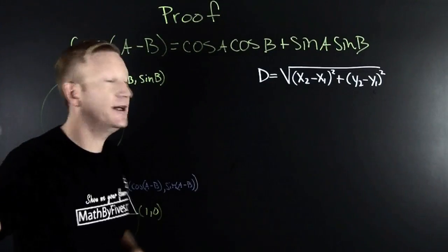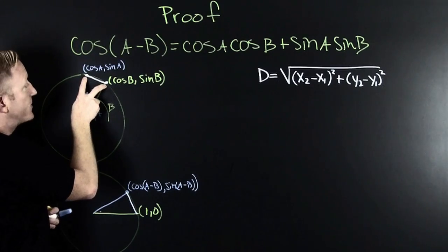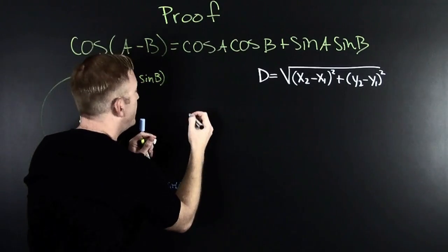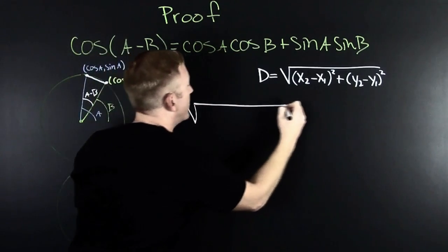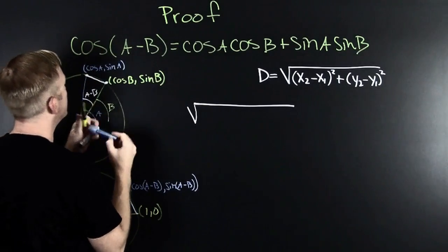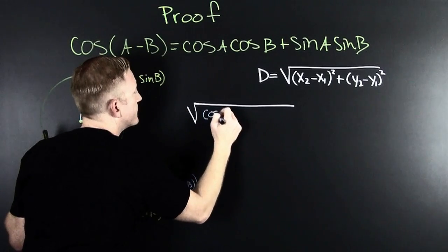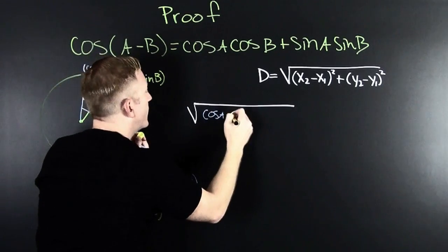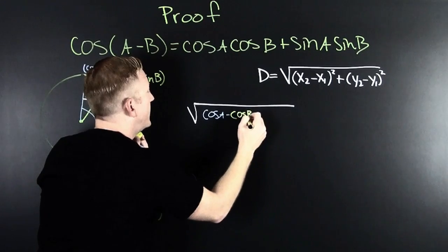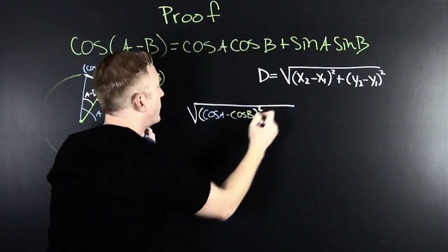So, we need to look at these points. The distance from this one here to here, this is going to be the square root of, wait for it, the difference of the X's. That's the cosine A minus the cosine B, and then that thing is going to be squared.